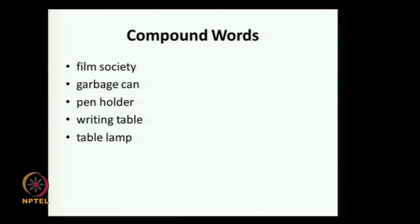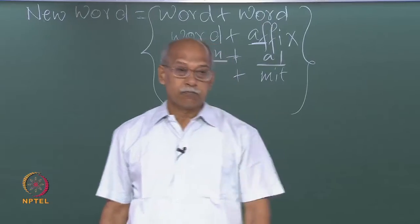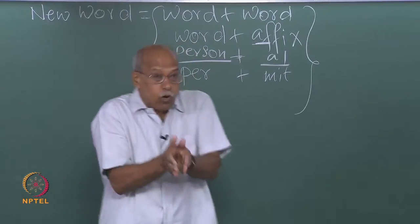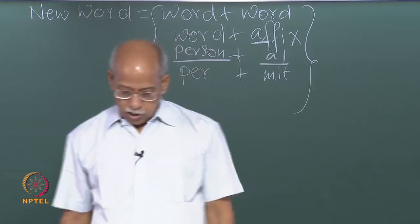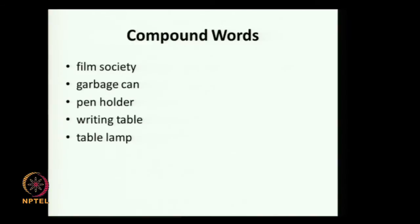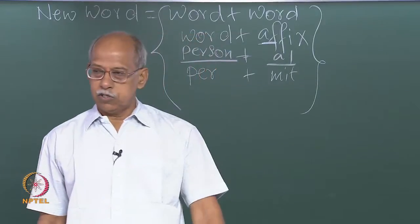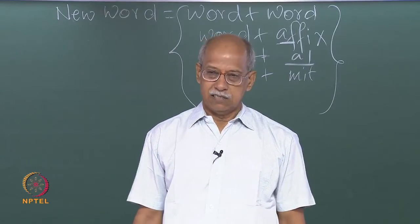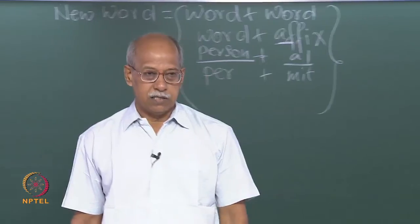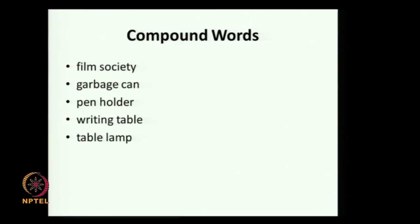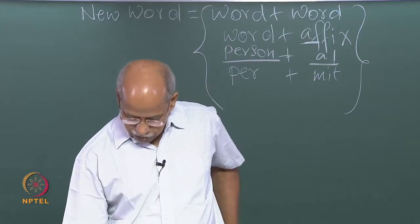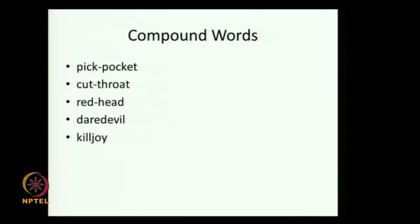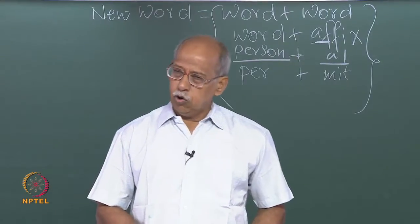Look at these words. 'Film society' — what kind of society? The first word is important, making one compound word. Similarly 'garbage can', 'pen holder', 'writing table', 'table lamp' — the first word is important. But there may be compounds where the second word is important, such as 'piggyback', 'cutthroat', 'redhead', 'daredevil'. We have these things in nearly all languages of the world.